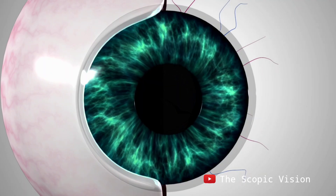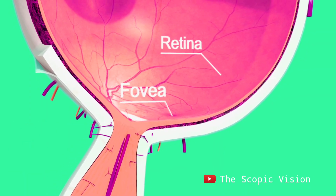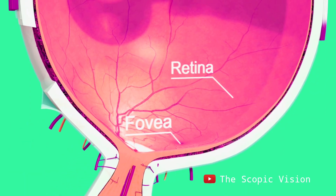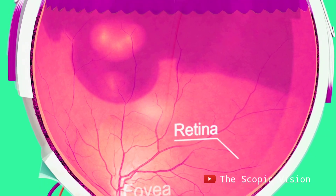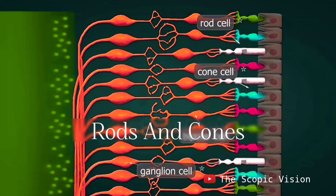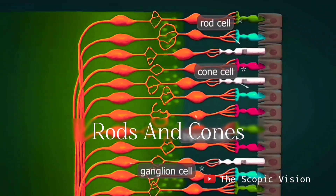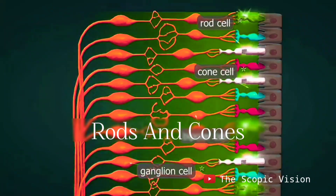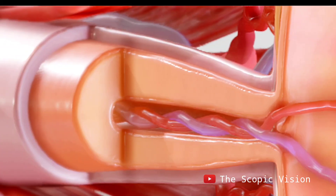The most sensitive part of the retina is the macula, containing millions of cones. This high density enables detailed vision. Photoreceptors in the retina convert images into electrical signals transmitted to the brain through the optic nerve.